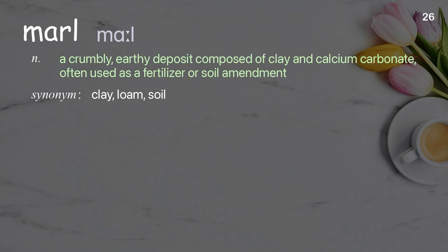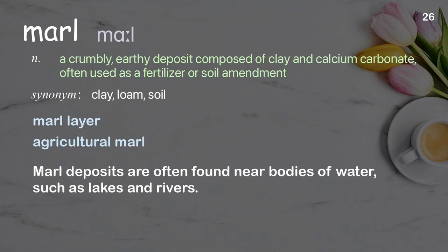Marl: a crumbly earthy deposit composed of clay and calcium carbonate, often used as a fertilizer or soil amendment. Examples: marl layer, agricultural marl. Marl deposits are often found near bodies of water such as lakes and rivers.